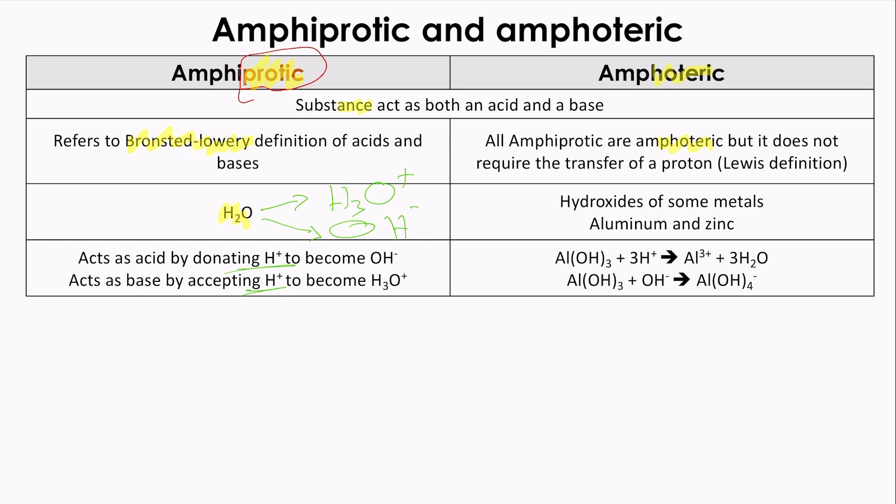On the other side, the amphoteric substances are those who react as acid or base to produce, as you can see here, they are producing salt. So we have here hydroxides of some metals like aluminum and zinc. They react with acids or base. So as you can see here, we have aluminum hydroxide. It could react with acid to make salt or it could react with base also to make salt.